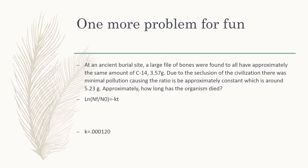I'll give you the formula, remind you what K is, and give you a little time to solve it. NF would be 3.57 grams, NO would be 5.23 grams, and when you solve for T, you get 3,128.05 years.